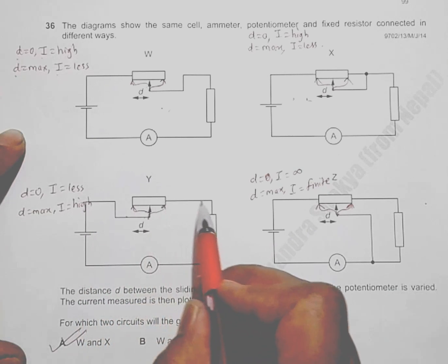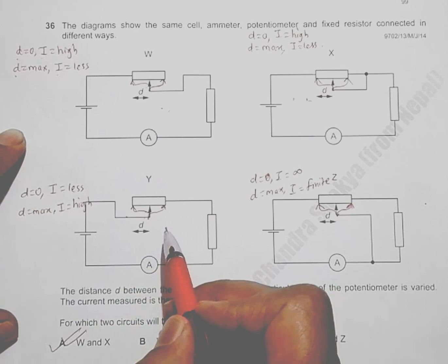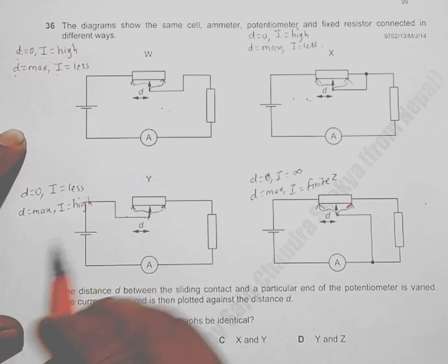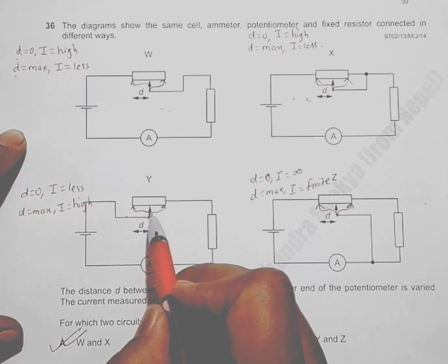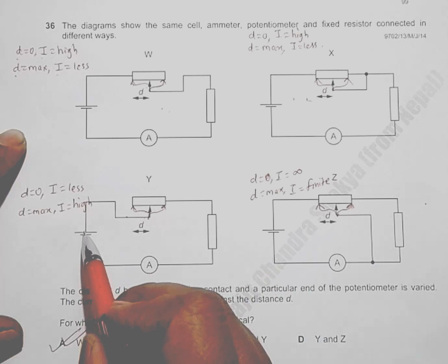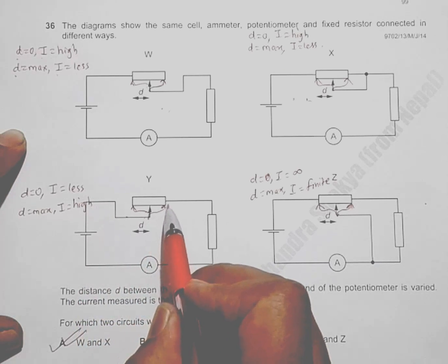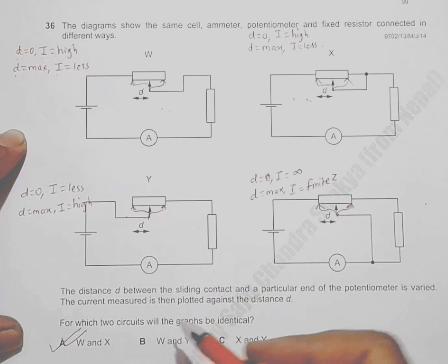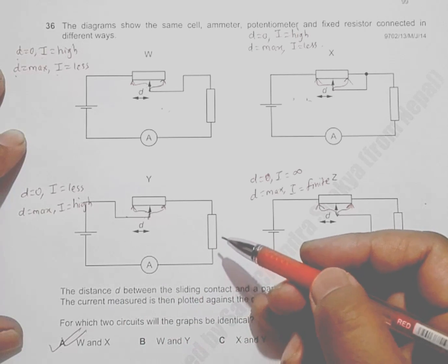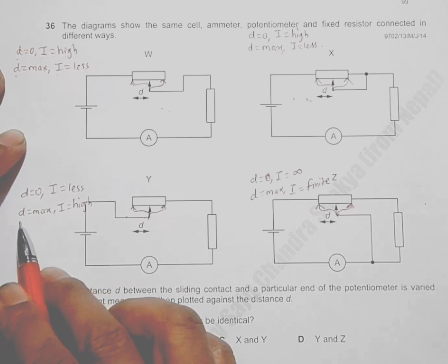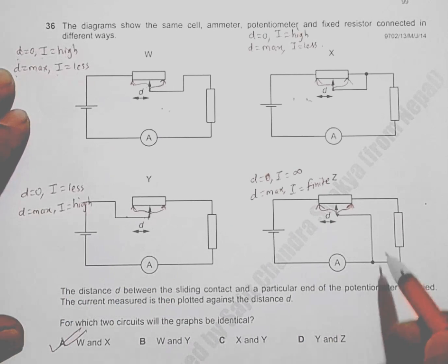In diagram three, when d equals zero, the contact is placed such that current flows through both resistors, making the current less. So d=0 gives low current. When the contact is moved to d=max, the resistor is bypassed, resistance decreases, and current is high. So this graph is the opposite of diagrams one and two.